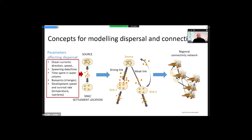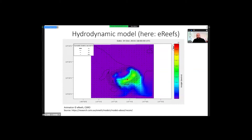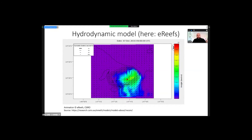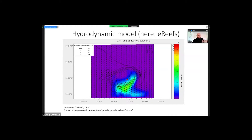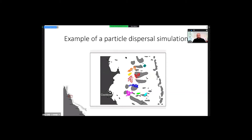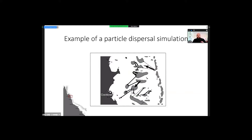To model the actual dispersal, we use oceanographic models. For my work I've mostly used e-reefs. You can see those little arrows that move around — that's the forces that move the particles you release from this red dot. They get moved around and then move to other reefs. This is what simulates the dispersal by hydrodynamic forces. This is a fairly crude animation of how this works when you release particles from different reefs — some particles get lost by hitting land, but other particles go to other reefs, and we can see where those connections between reefs are.